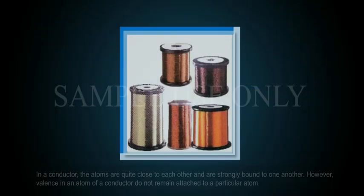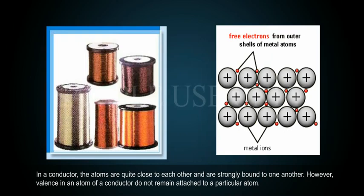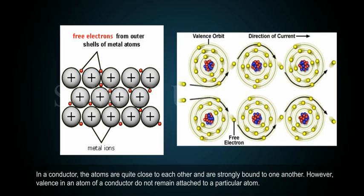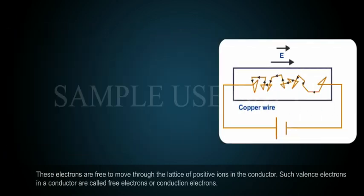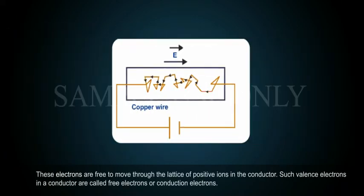In a conductor, the atoms are quite close to each other and are strongly bound to one another. However, valence electrons in an atom of a conductor do not remain attached to a particular atom. These electrons are free to move through the lattice of positive ions in the conductor. Such valence electrons in a conductor are called free electrons or conduction electrons.